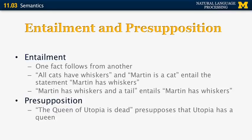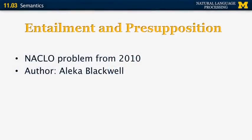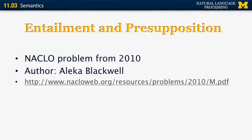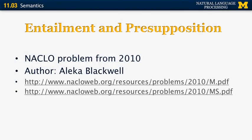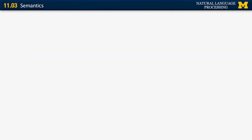Now let's look at presupposition, which is better explained with an example. If I say 'the queen of utopia is dead,' that presupposes that utopia has a queen — otherwise the sentence doesn't make any sense. This is a good point to introduce a NACLO problem from 2010 that describes entailment and presupposition in more detail. This problem was written by Aleka Blackwell and is available on the NACLO website.